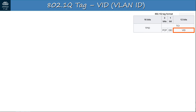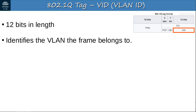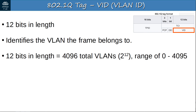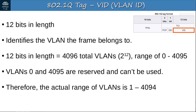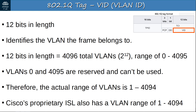Finally, the most important field is the VID, or VLAN ID. It is 12 bits in length and actually identifies which VLAN the frame belongs to. Because the field is 12 bits, there are 4096 total VLANs (2 to the power of 12 equals 4096). However, the first and last VLANs — 0 and 4095 — are reserved, so the actual usable range is 1 to 4094. Cisco's proprietary ISL also uses a VLAN range of 1 to 4094, but ISL has been almost completely replaced by dot1Q.